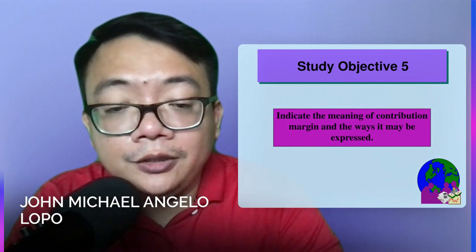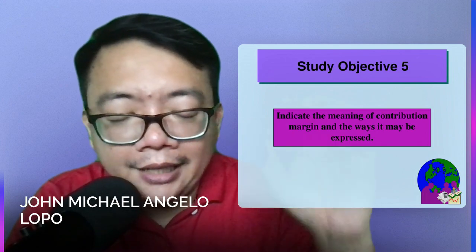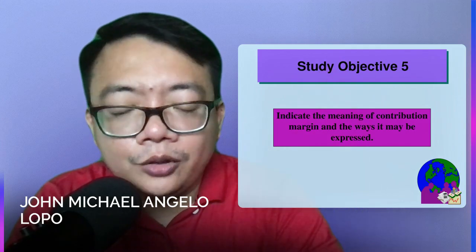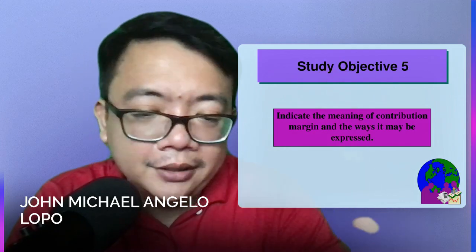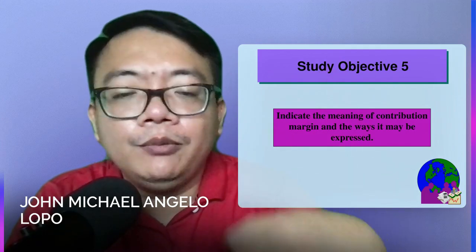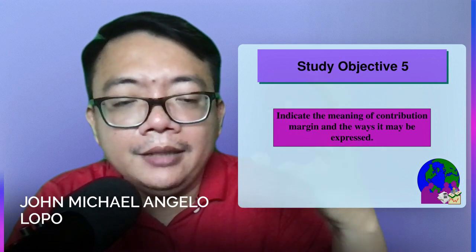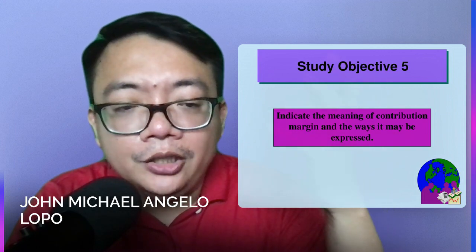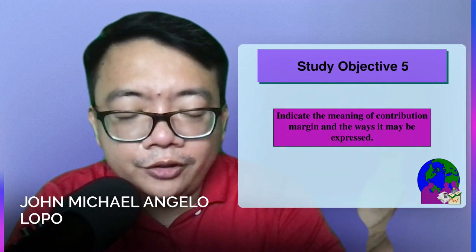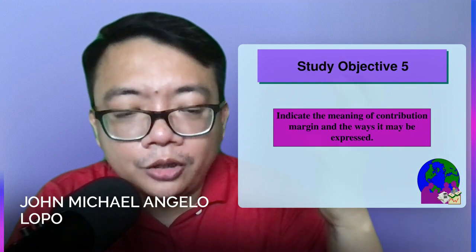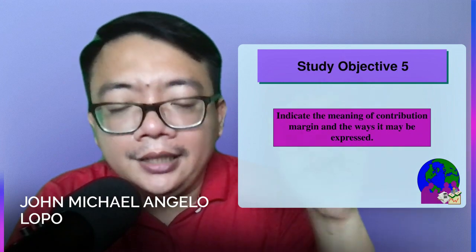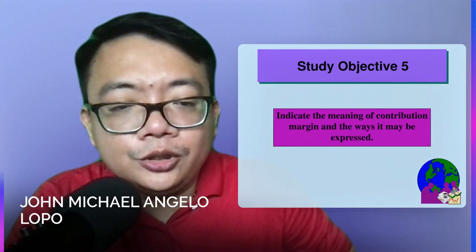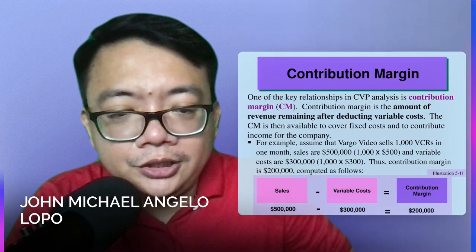Also in terms of percentage — 100% is always your sales. The variable cost, depending on the amount, you just divide it by your sales to get your variable cost ratio. Just subtract the two and you have your contribution margin ratio.